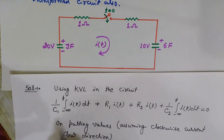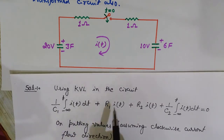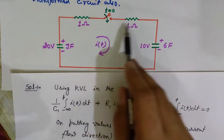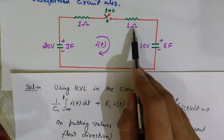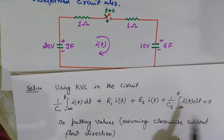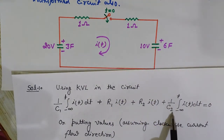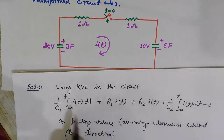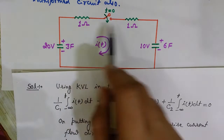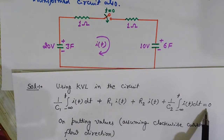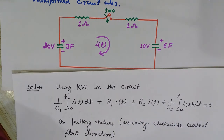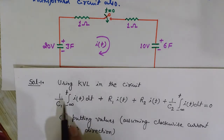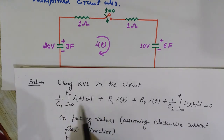The KVL equation is: the summation of potentials across each component — the two capacitors and two resistors — equals zero. We will substitute the values of C1, C2, R1, R2 and also carefully determine the signs. Understanding the sign convention is the most important part.